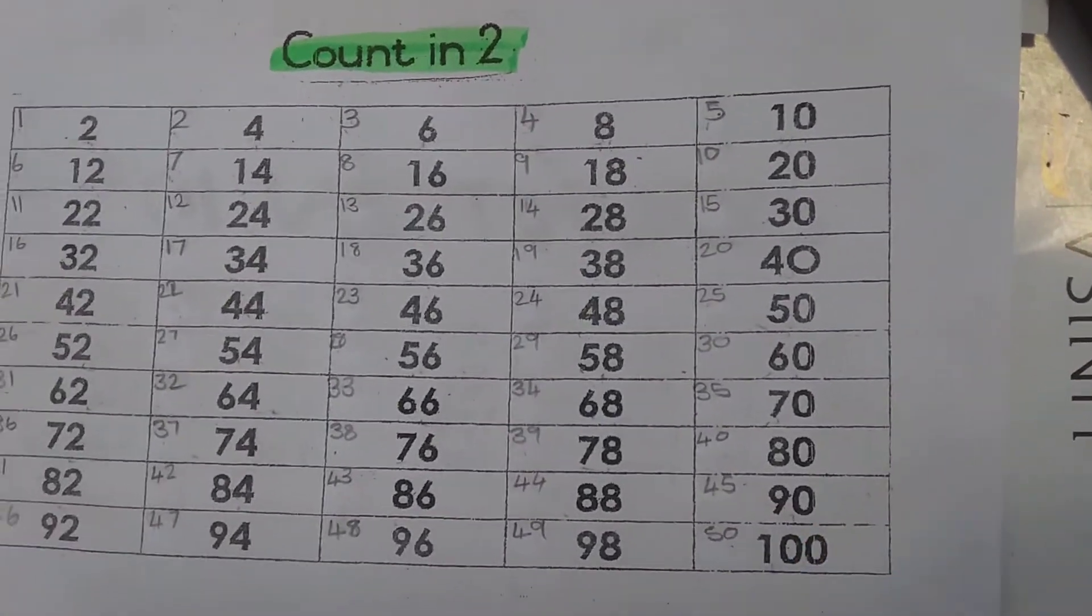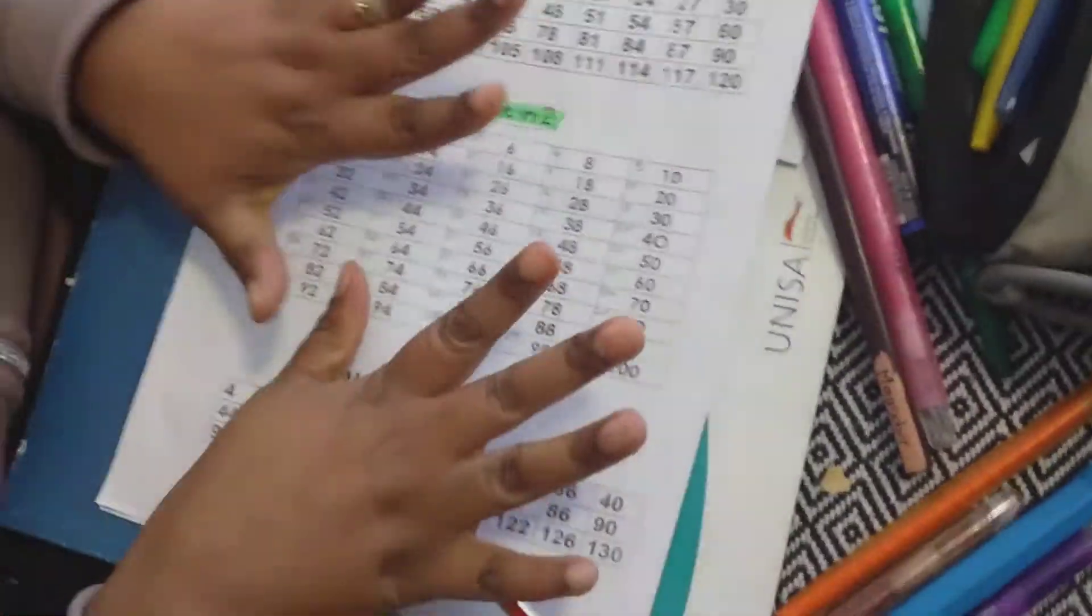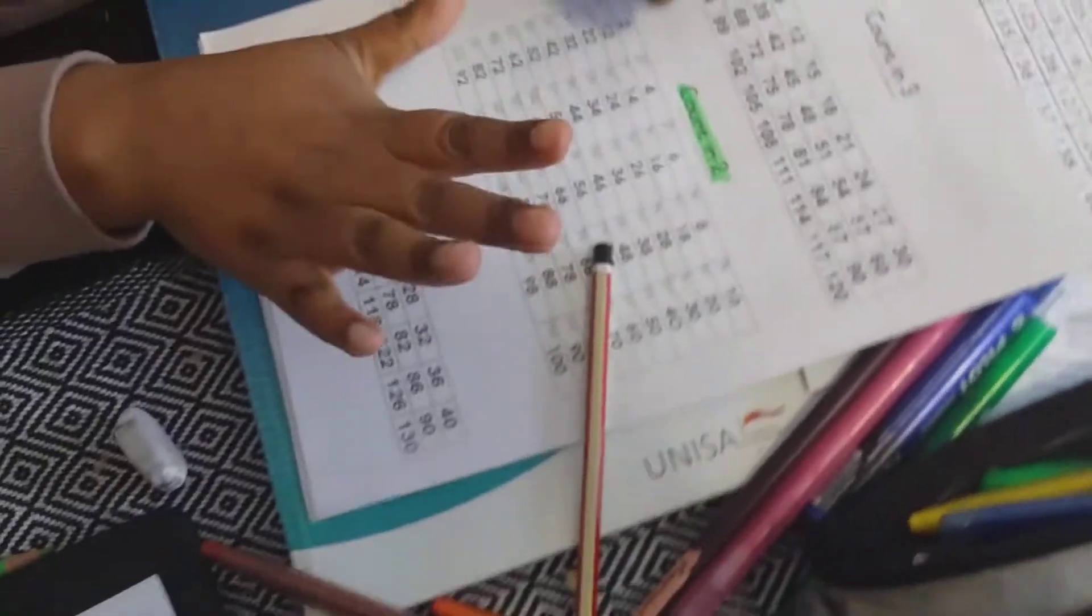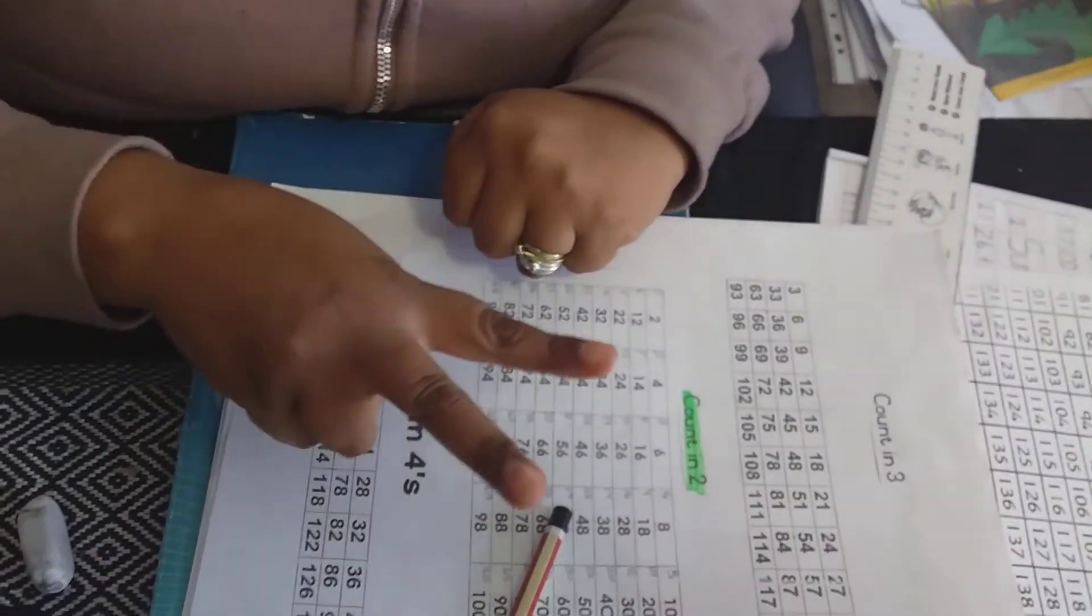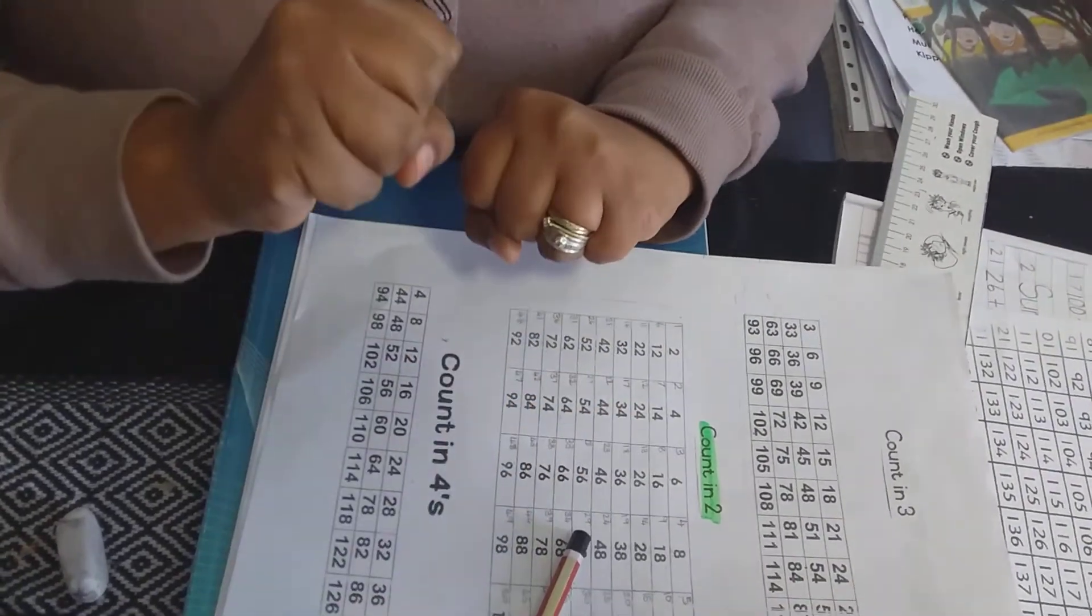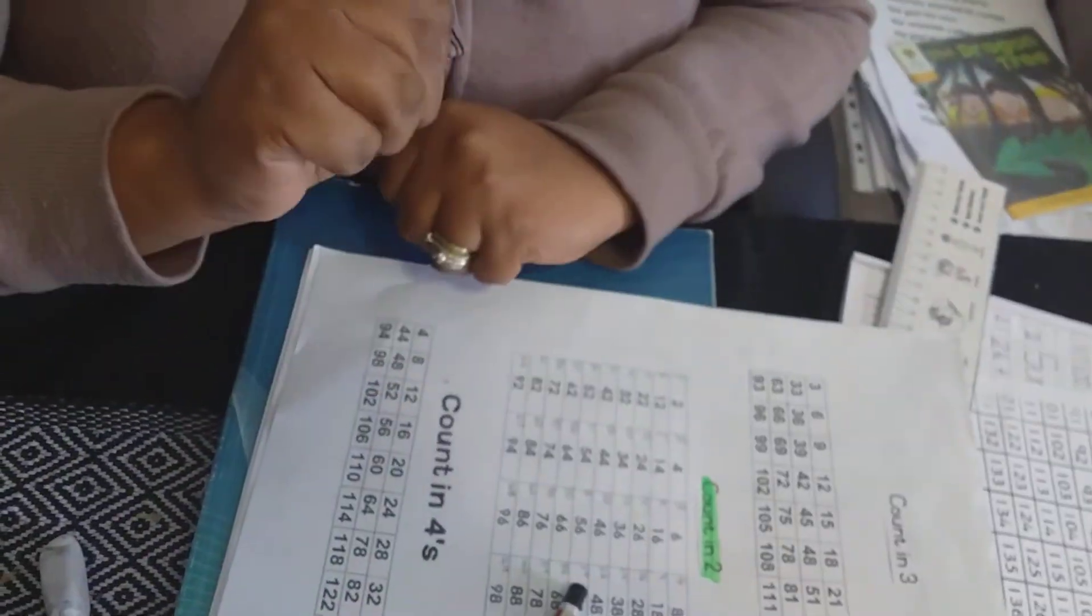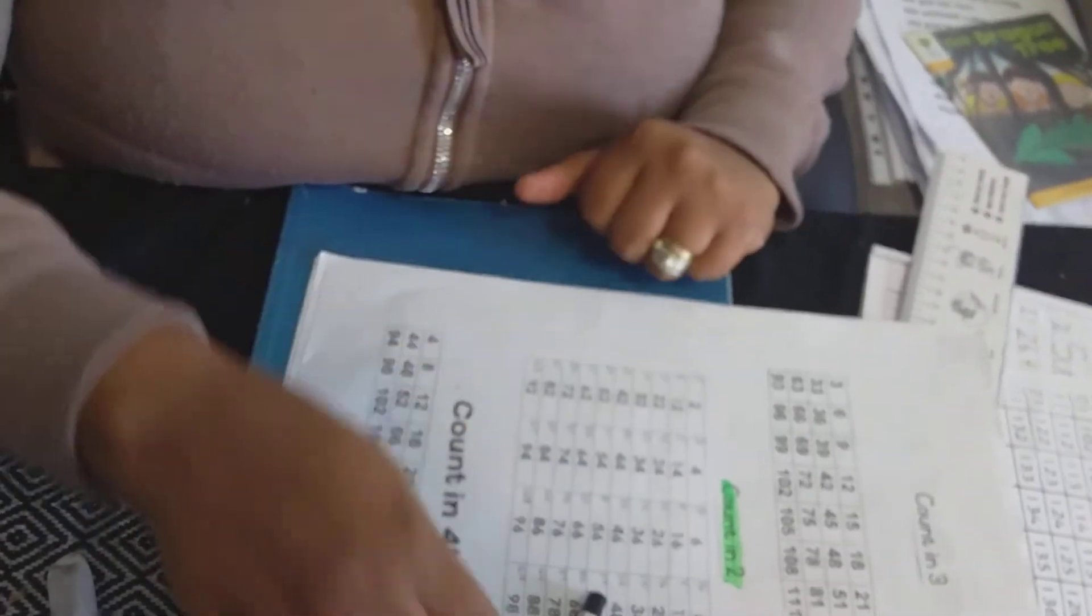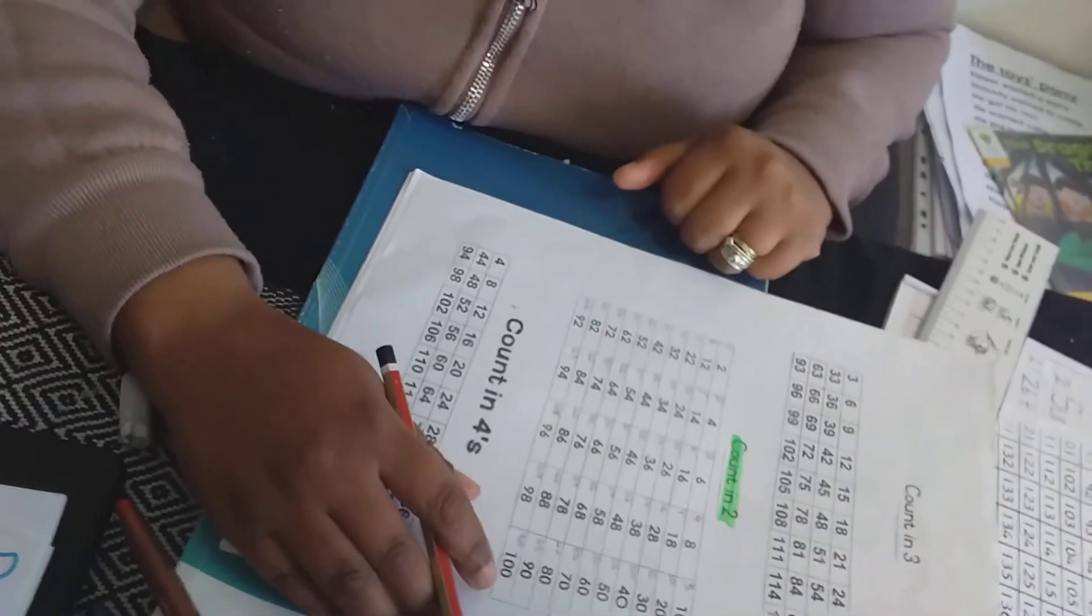And don't forget: 2, 4, 6, 8, 10, 12, 14, 16, 18. We go on until 100 every single day.